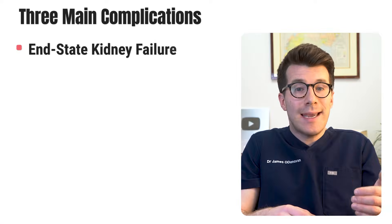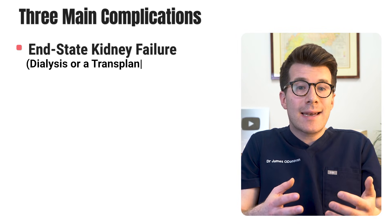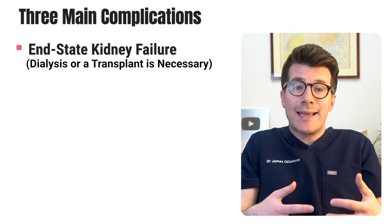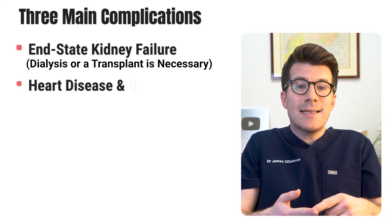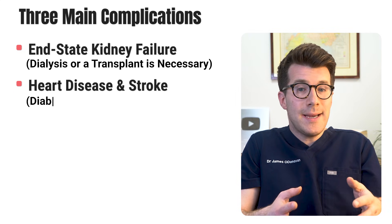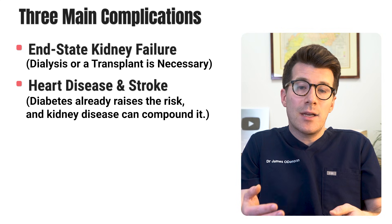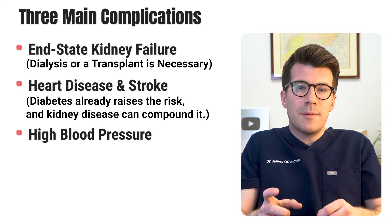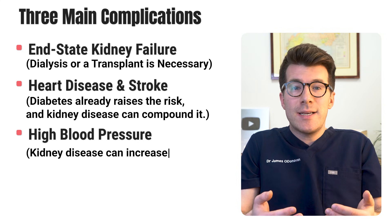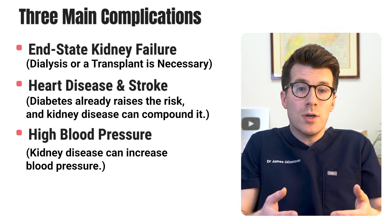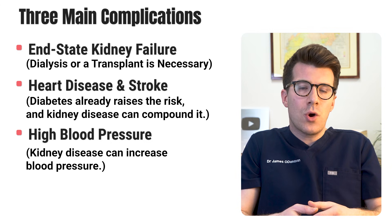There are three main complications of diabetic kidney disease to be aware of. First is end-stage kidney failure, where dialysis or a kidney transplant becomes necessary. Second is heart disease and stroke — diabetes already raises the risk of these, and kidney disease can compound it. Finally, high blood pressure: kidney disease can increase blood pressure, which in turn worsens kidney problems if it's not controlled.